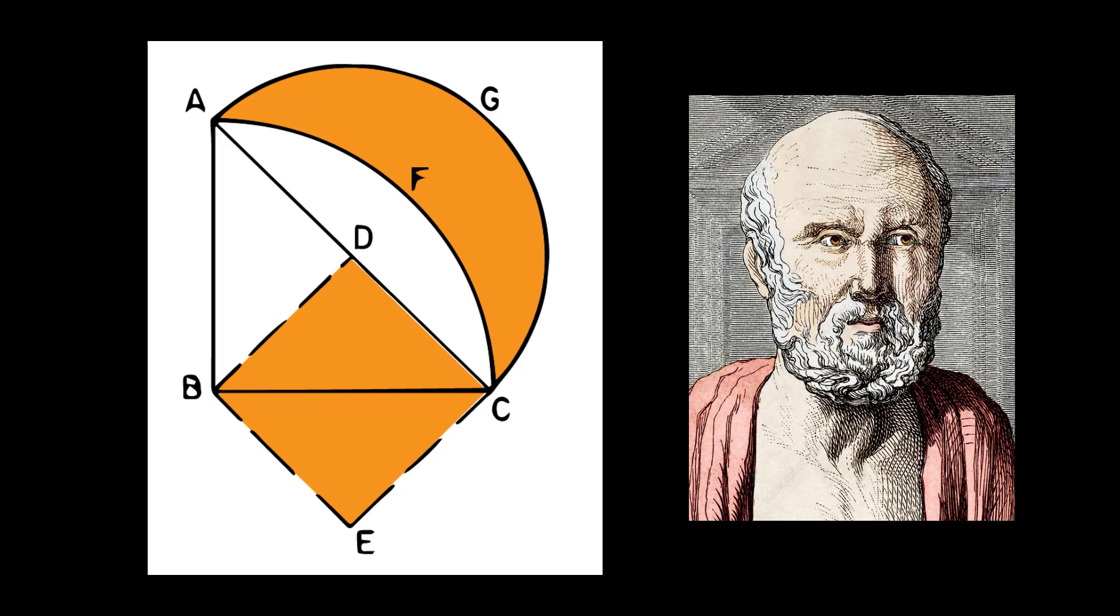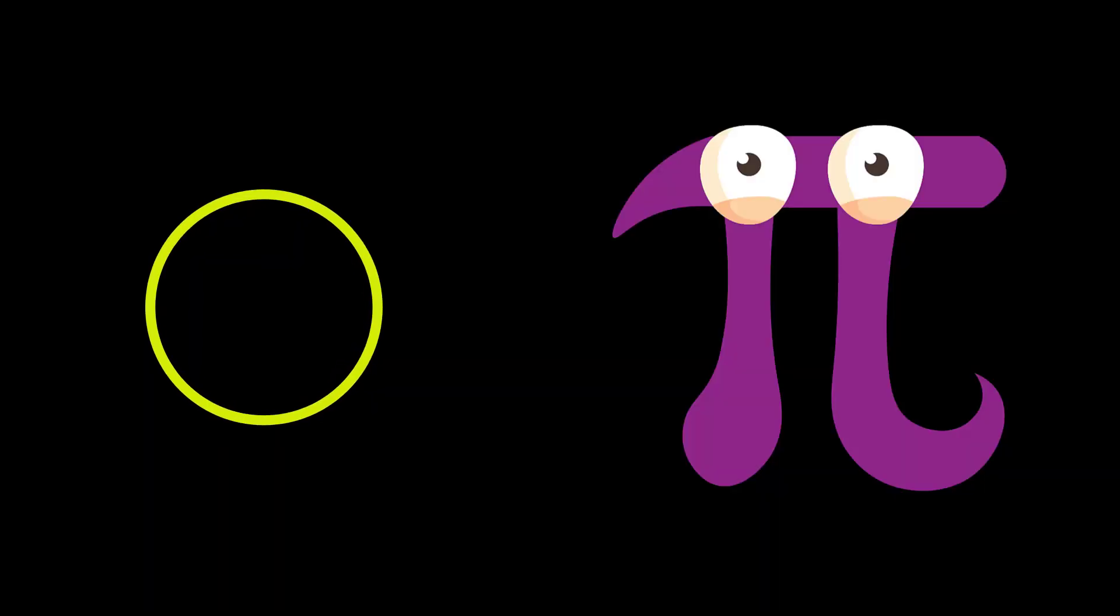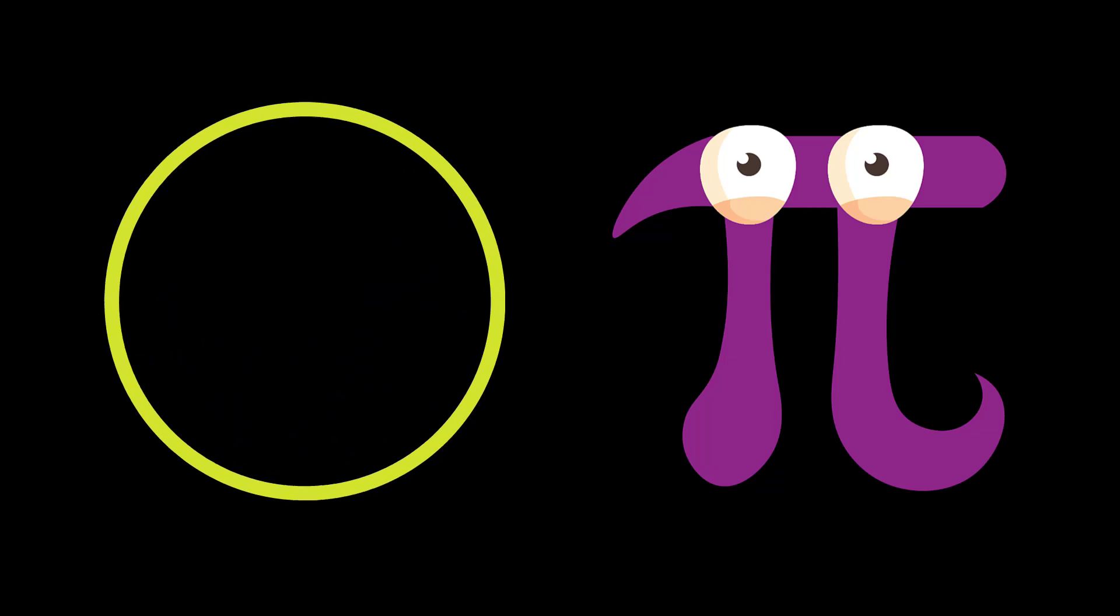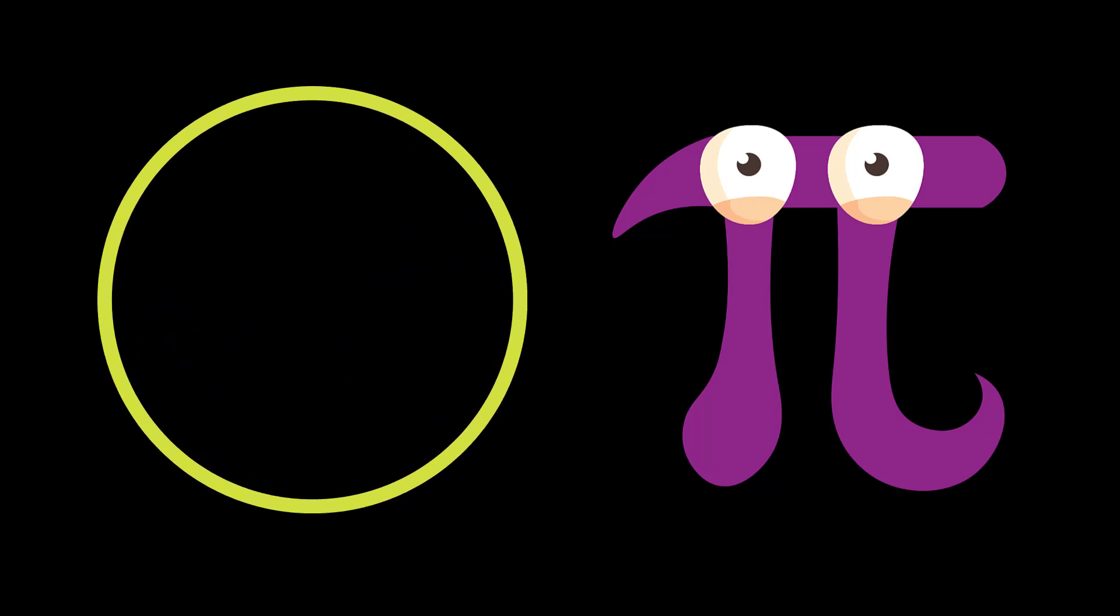Now, if a crescent can be squared, why not a circle? After all, a circle is a far smoother and simpler figure than a crescent. Though men sought continually for a construction which would square the circle, it wasn't there to be found.